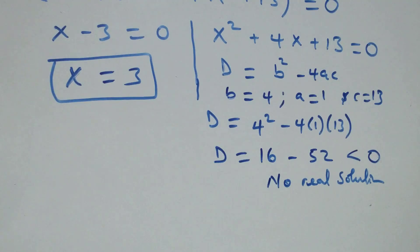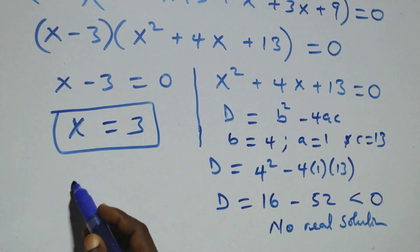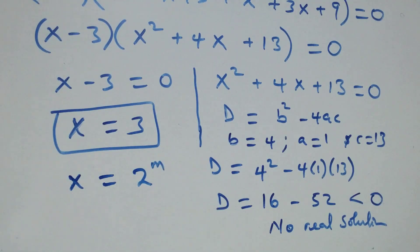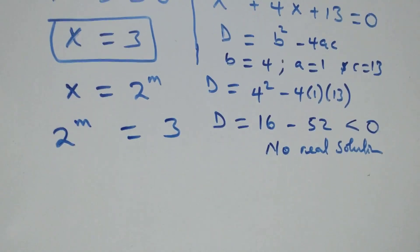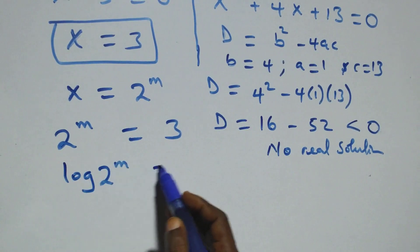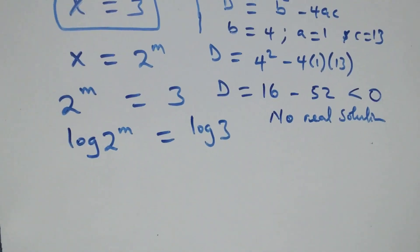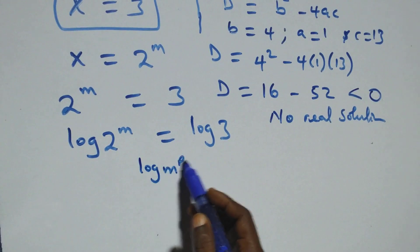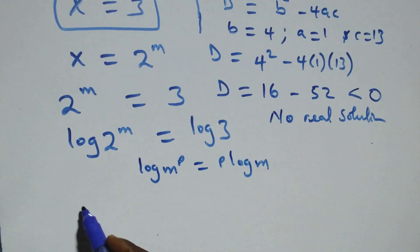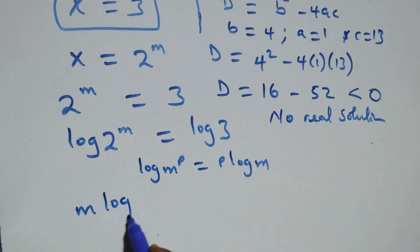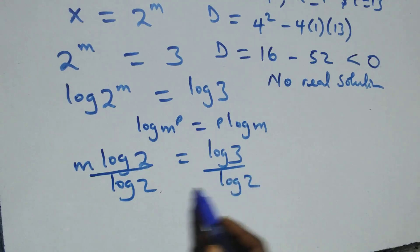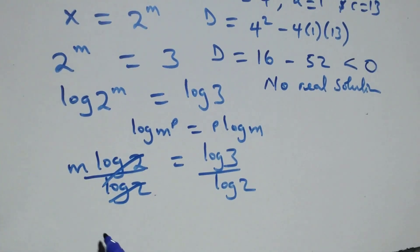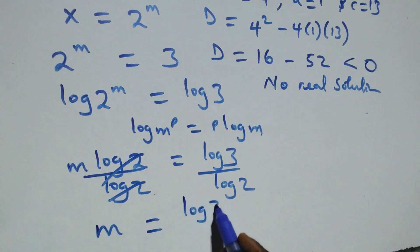Then let's solve from here — we recall that we represented x as 2 raised to power m. That is here we have 2 raised to power m now equals to 3. To get m, we take the log on both sides: log of 2 raised to power m equals log 3 here. Then applying the power rule of logarithm — log m raised to power p is the same thing as p·log m — we have m·log 2 equals log 3. Then dividing both sides by log 2, the log 2 cancels and we have m equals log 3 over log 2.